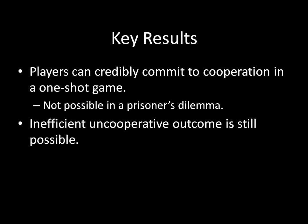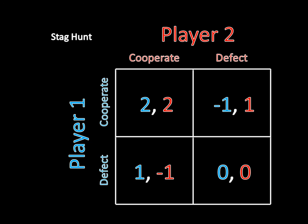The second key result is that inefficient, uncooperative outcomes are still possible. Why? Let's look at the bottom right corner. Imagine that both players thought the other one was going to defect. Well, in that case, we're both getting a payoff of zero. So if I think that you're going to stab me in the back, my best response is to stab you in the back as well. If I think you're going to defect, I should defect too so I can get that blue zero in the bottom right corner — whereas if I cooperate, I'm only going to get a negative one, allowing you to stab me in the back.